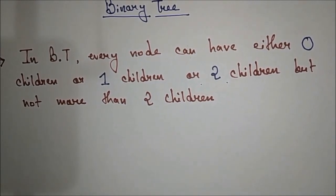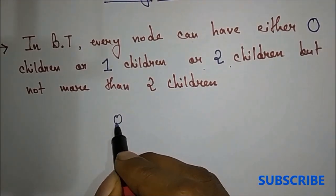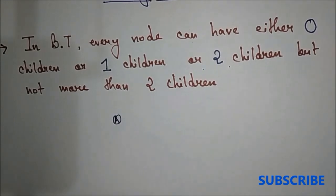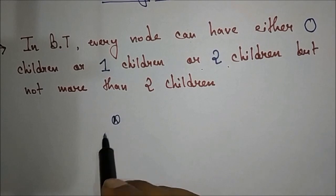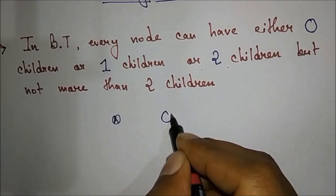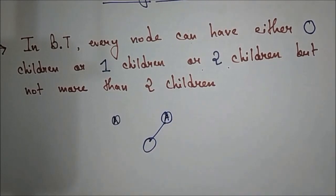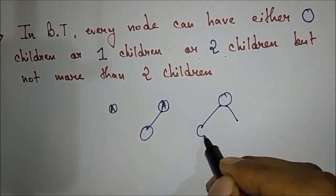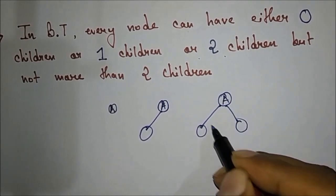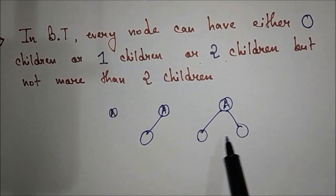So there are 3 conditions for every node: 0 children, 1 child, or 2 children. For example, this is node A and this is one binary tree because it does not have any children. Another binary tree has node A with only 1 child. Another binary tree has node A with 2 children. The maximum we can have is 2 children.